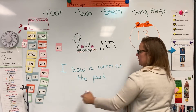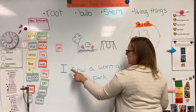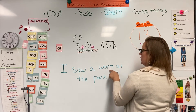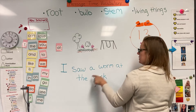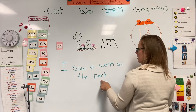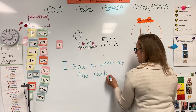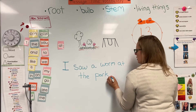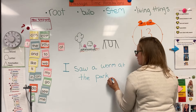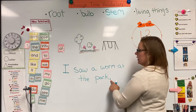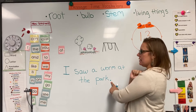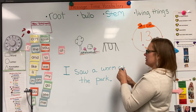Read it with me: I saw a worm at the park. And I'm ending my sentence with a period. Period means stop. The sentence is done.